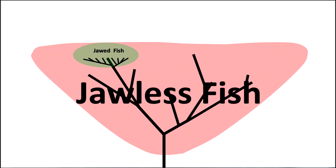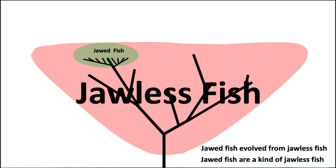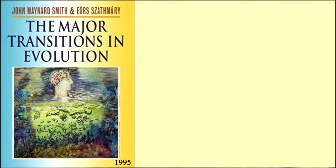Now, this is something we're used to because we've talked about how jawed fish evolved from jawless fish. And so we say that jawed fish are a kind of jawless fish — in other words, a jaw had to evolve from something that didn't have a jaw. Now, what about this transition from prokaryotes to eukaryotes?